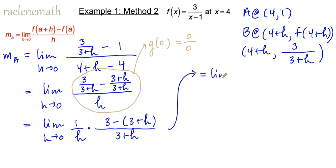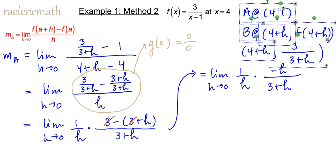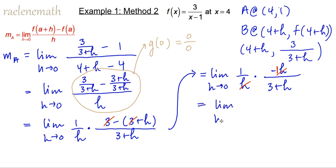Then we continue, and we get the limit as H approaches 0. Notice that 1 over H is the variable of the limit, and it's not a constant that can come in front. We get 3 minus 3, and then minus H. Simplifying the 3 minus 3, we have negative H over 3 plus H. This is nice because we can already see the common factor, the one that caused the indeterminacy. Reducing that common factor, keeping in mind there's a negative 1 factor left in the numerator, we directly substitute and the indeterminacy is gone — giving an answer of negative 1 third.